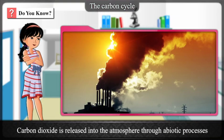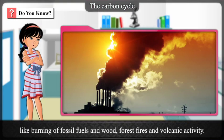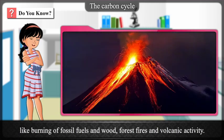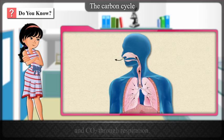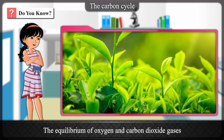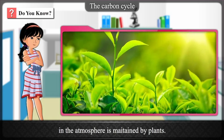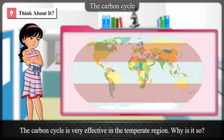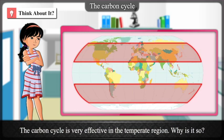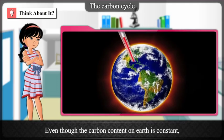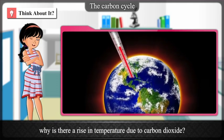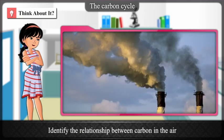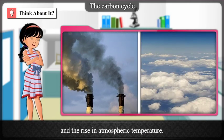Carbon dioxide is released into the atmosphere through abiotic processes like burning of fossil fuels and wood, forest fires and volcanic activity. Oxygen is released into the atmosphere by the biotic process of photosynthesis, and CO₂ through respiration. The equilibrium of oxygen and carbon dioxide gases in the atmosphere is maintained by plants. Think about it: The carbon cycle is very effective in the temperate region — why? Even though the carbon content on Earth is constant, why is there a rise in temperature due to carbon dioxide? Identify the relationship between carbon in the air and the rise in atmospheric temperature.